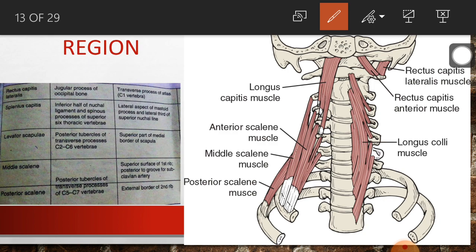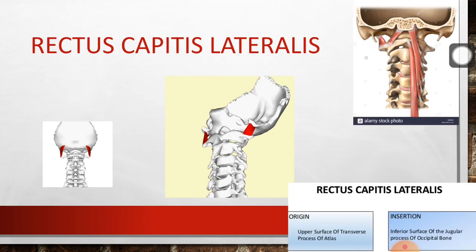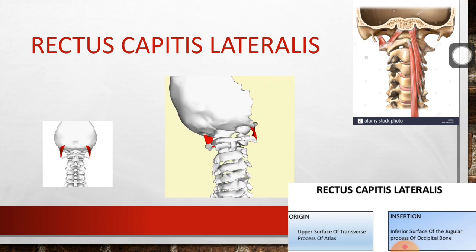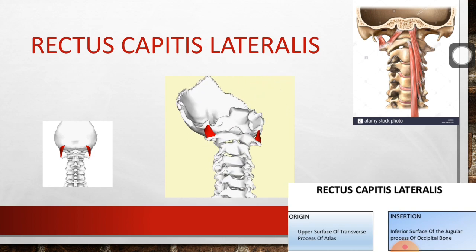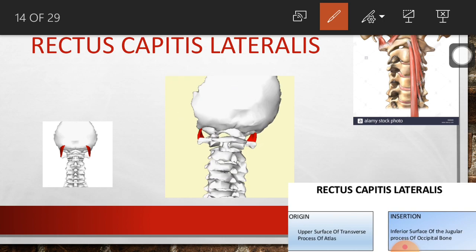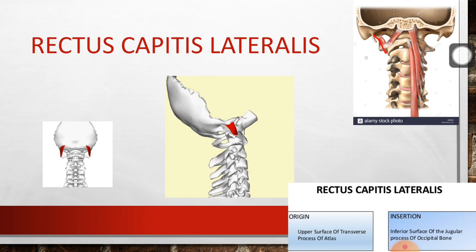In the para-vertebral region the muscles are: rectus capitis lateralis, splenius capitis, levator scapulae, scalenus medius, and scalenus posterior. Focusing on rectus capitis lateralis, the origin is the upper surface of the transverse process of the atlas, and the insertion is the inferior surface of the jugular process of the occipital bone. In the right-hand side diagram you can see the location of rectus capitis lateralis.